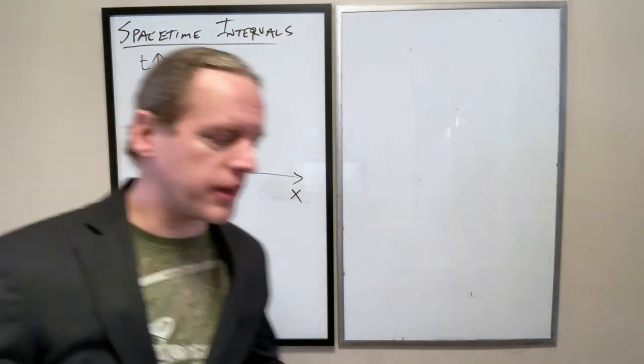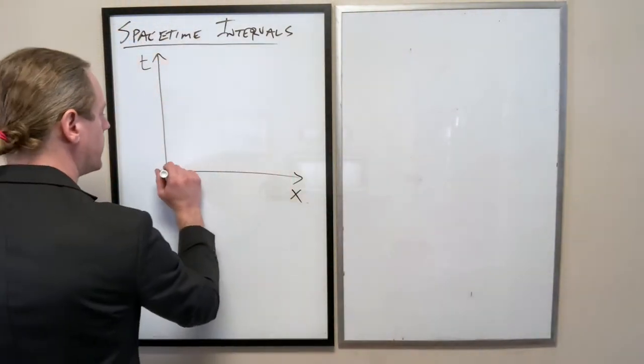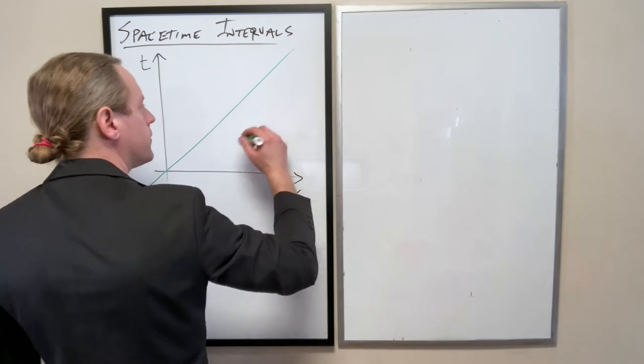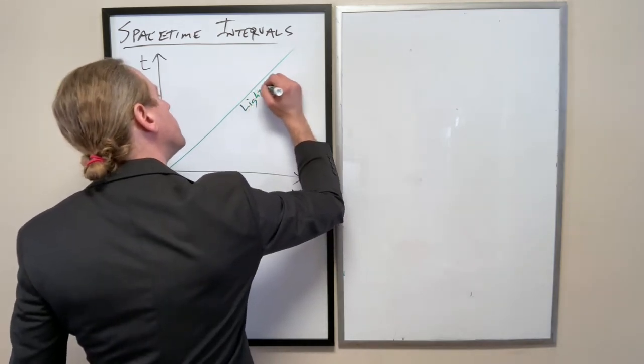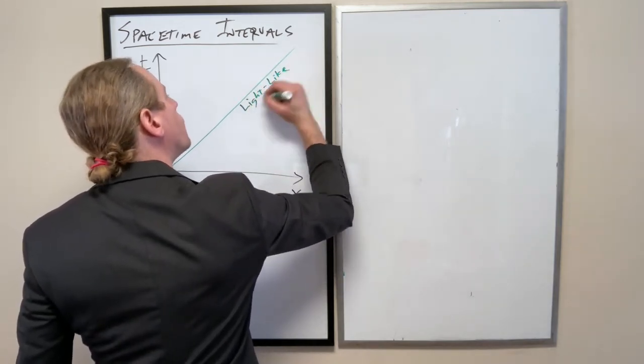And I'm directly going to think of that as t. And I'm going to draw, and again, think of this as light years and years or light seconds and seconds. So I'm going to go ahead and draw the 45 degree angled line. This is my axis here. And again, we call this a light-like world line.